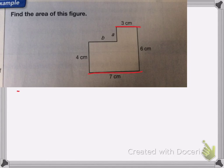So I need to do 7 minus 3 to get b. 7 minus 3 is 4. So b is equal to 4, 4 centimeters.